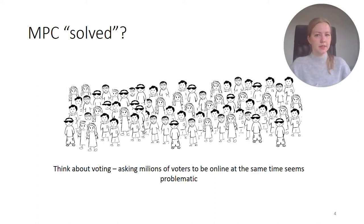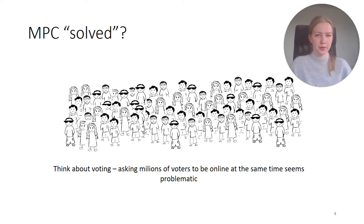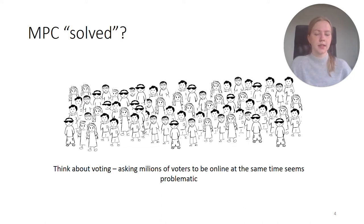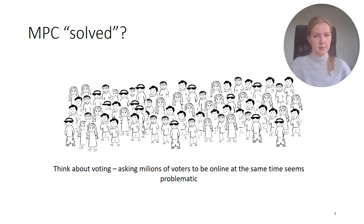Unfortunately, even the protocols which satisfy this optimal round complexity are sometimes problematic, as they typically assume synchronous communication from the participants. Why is this a problem? Well, imagine a voting process in some large country. If the voting is conducted via an off-the-shelf MPC protocol, all voters of that country must be online at the same time, which seems like a very unrealistic assumption.